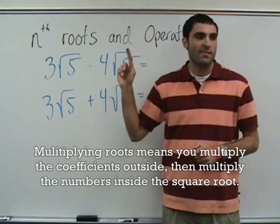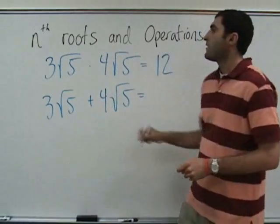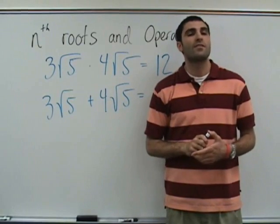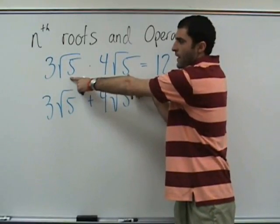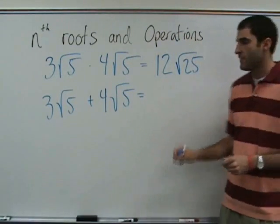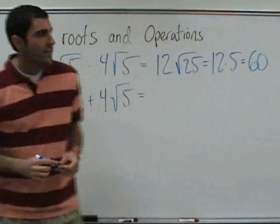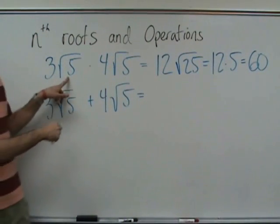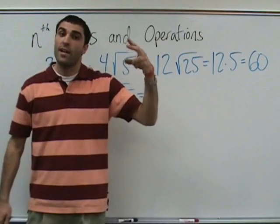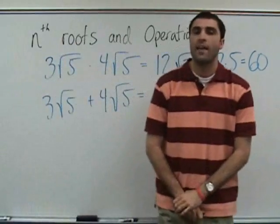They multiply. The outside multiplies — so the 3 and the 4 multiply to give 12. Square root of 5 times square root of 5 is the square root of 25, which is 5. So this is 12 times 5, which is 60. Keep in mind: any root times itself is just the number inside. Root 3 times root 3 is 3. Root 4 times root 4 is 4. Root x times root x is x.